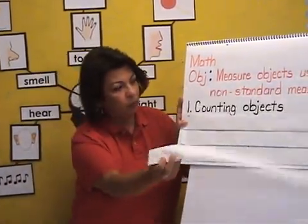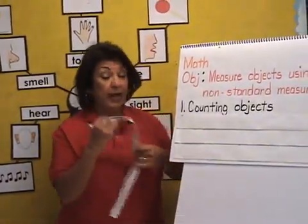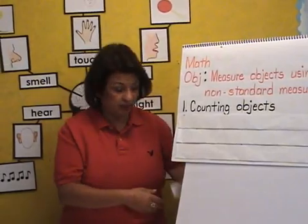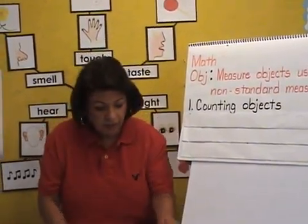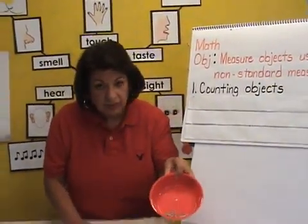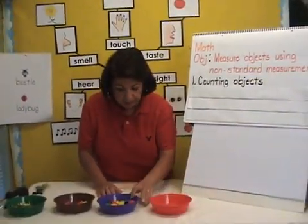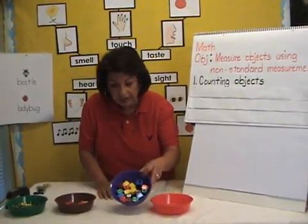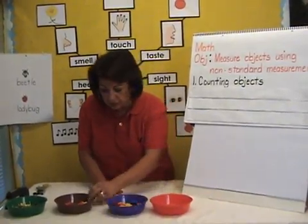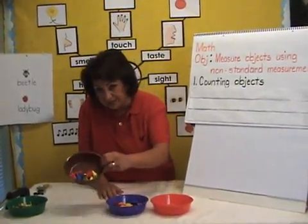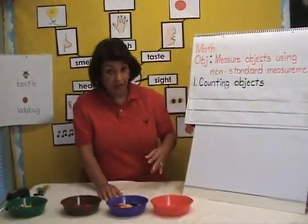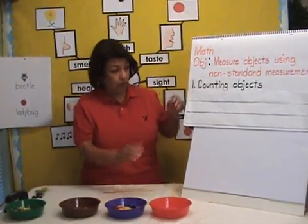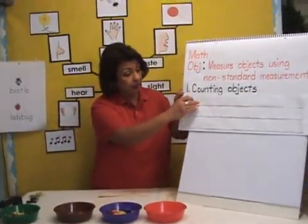The first skill is that they'll be counting objects. As you can see here, I have different objects: I have paper clips, I have unifix cubes, and just plastic animals. So they'll be counting objects when they're doing this activity.